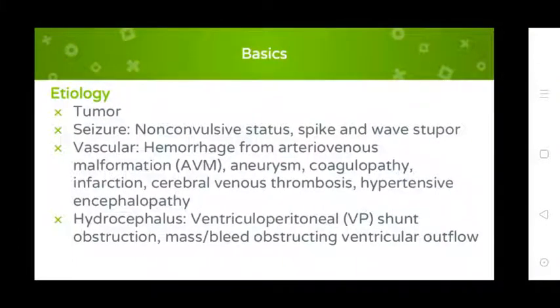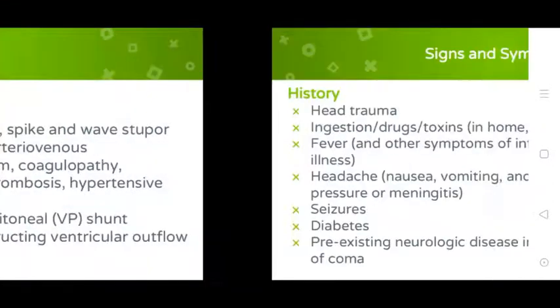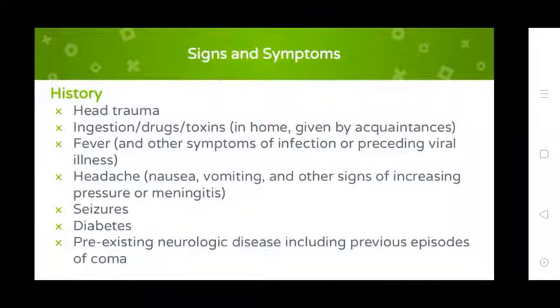Additional etiologies: tumor, seizure including non-convulsive status epilepticus and spike-and-wave stupor. Vascular causes: hemorrhage, arteriovenous malformation, aneurysms, coagulopathy, infarction, cerebral venous thrombosis, hypertensive encephalopathy. Hydrocephalus with increased intracranial pressure, peritoneal shunt obstruction, mass lesion causing ventricular outflow obstruction.